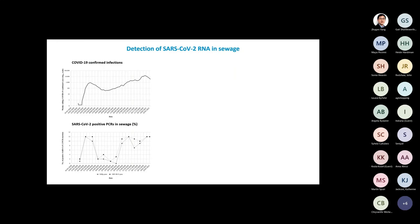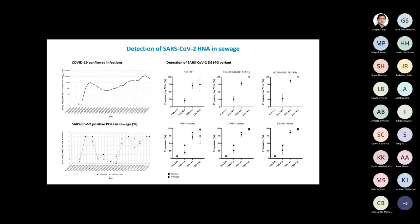We detected the virus early in the pandemic, before any cases had been described in the surveillance area. The detections match clinical samples quite nicely — showing a big drop in July-August then back up again and remaining high ever since. Using the amplicon sequencing technique, we detected the rise of the D614G variant very early in the pandemic, which substituted the original Wuhan virus and became the predominant virus worldwide. Different mutations characteristic of this variant clearly increased with time and correlated well with clinical surveillance data.